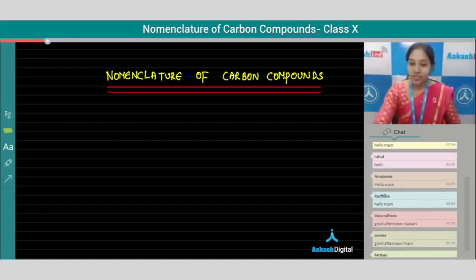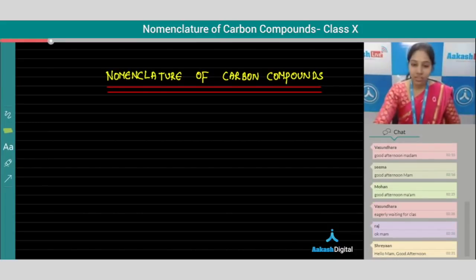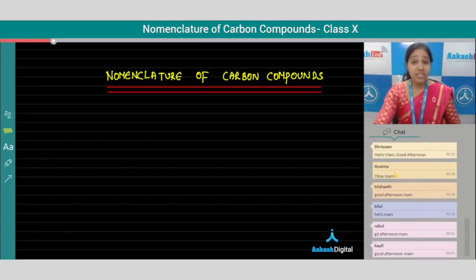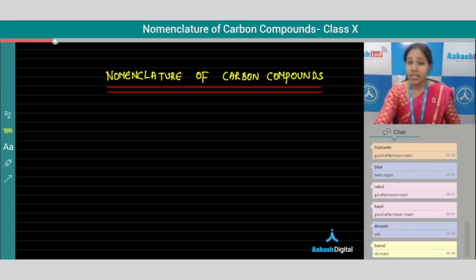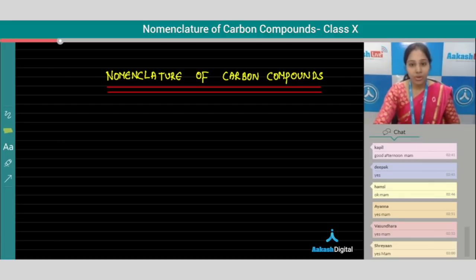Today I am going to explain nomenclature of carbon compounds. Nomenclature means naming of carbon compounds. Just as parents consider many things like date of birth and time of birth to name their children, similarly, in order to give a name to a carbon compound, we also consider certain rules, and according to those rules we give a name for a particular carbon compound.